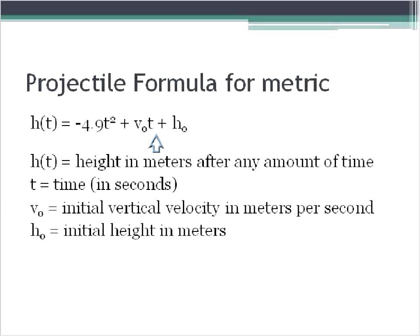For the metric system, we use this equation. The function h(t) means the height in meters after any given amount of time in seconds, and it's equal to negative 4.9t squared. t is equal to time, plus v sub 0, which means the initial vertical velocity. And we'll see all of these inside the questions. The velocity times t, plus h, which is the initial height.